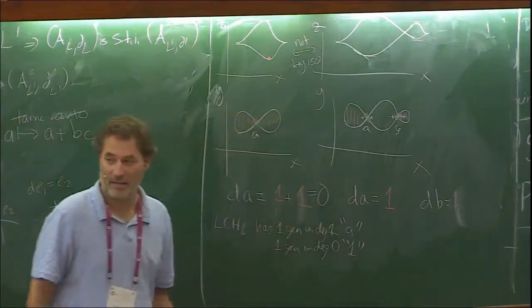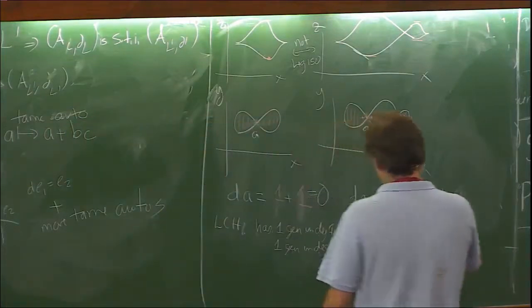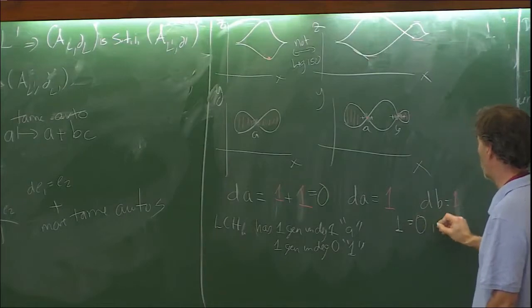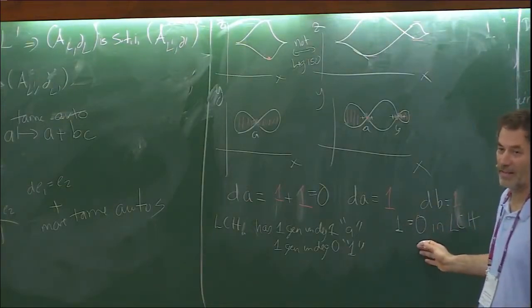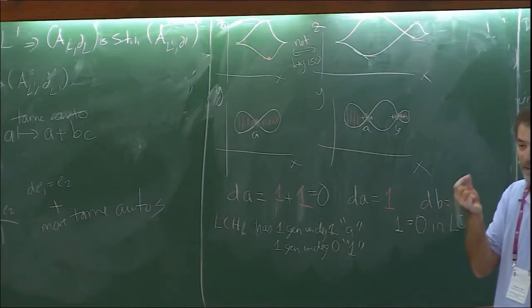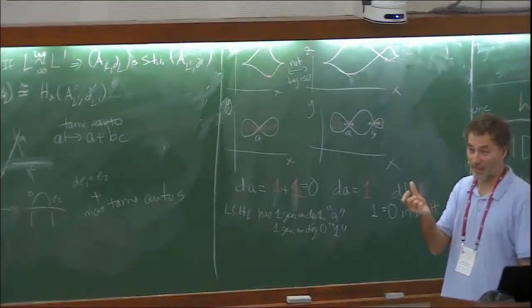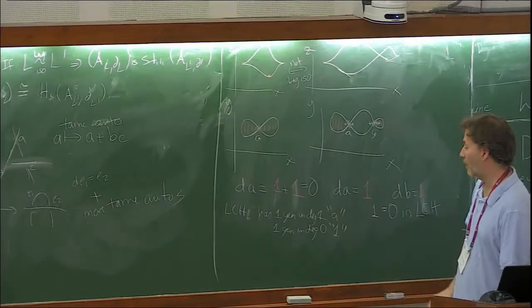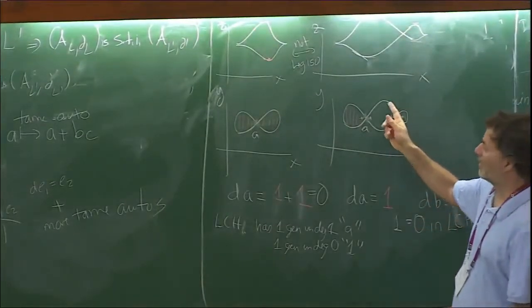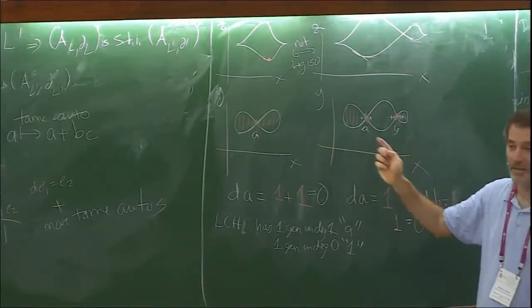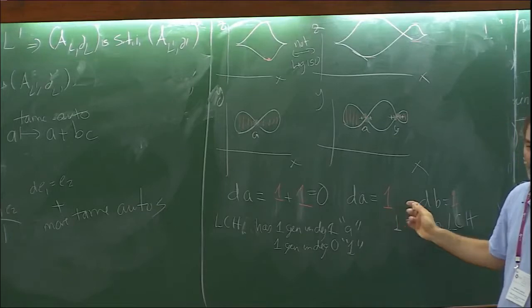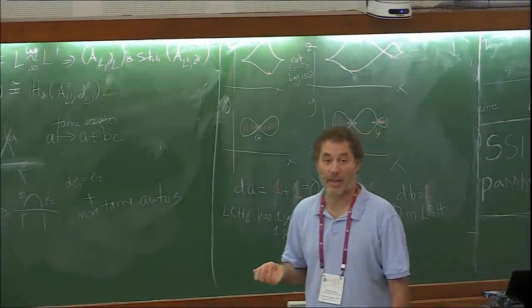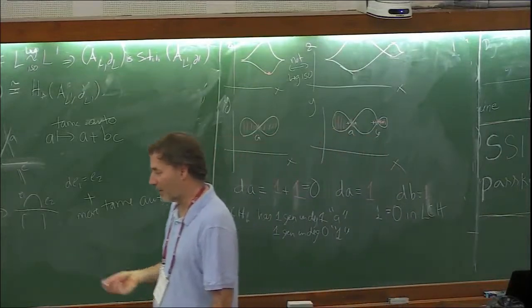Over here, we have the unfortunate fact that 1 equals 0 in LCH. In this case, this is a completely trivial algebra where the zero element and the multiplicative and additive identity elements have been identified — there's only one element. This is an example where a stabilization kills the LCH. The holomorphic curve invariant can't detect how many stabilizations there are — whether it's one or seven, the Legendrian contact homology is trivial for all of those.